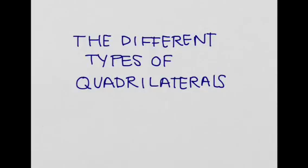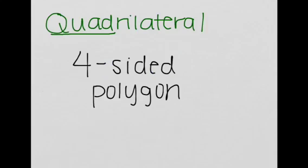Hi, today we're going to be talking about the different types of quadrilaterals. Let's get started. So remember, a quadrilateral is a four-sided polygon, and it comes from this root, which is quad, which means four. So it's a quadrilateral, or a four-sided polygon.